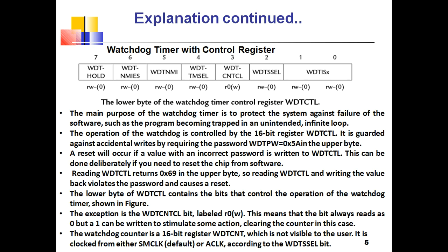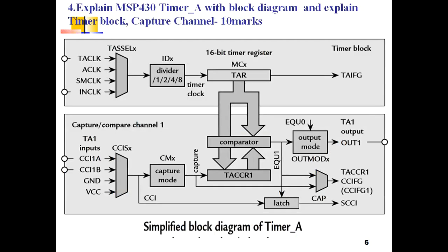The lower byte of the watchdog timer control register contains bits that control its operation. The watchdog timer control bit labeled here always reads as zero but can be written. Clearing the counter is necessary in this case. The watchdog counter is a 16-bit register not visible to the user, clocked from either SMCLK or ACLK, selected by the watchdog timer selection bit.